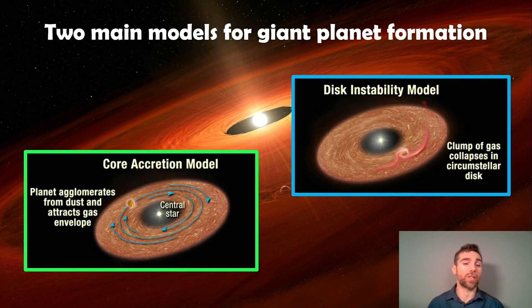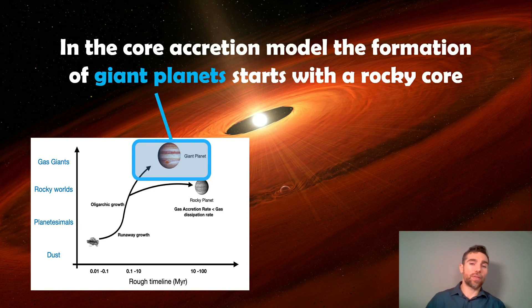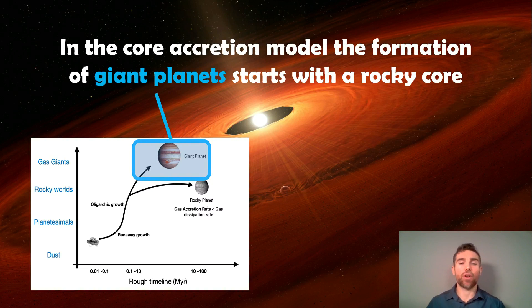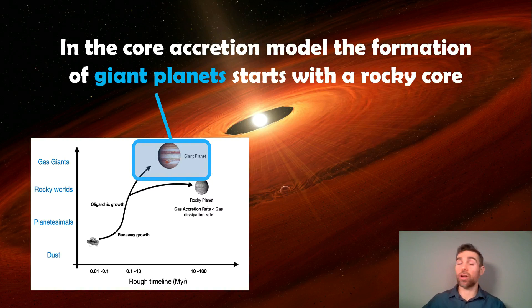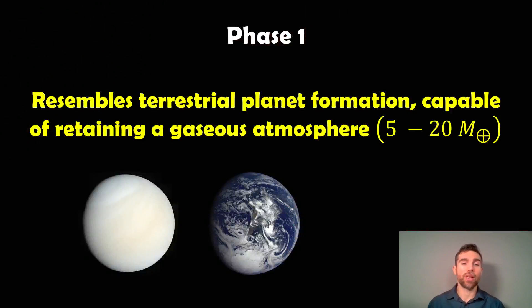Core accretion involves the slow accumulation and growth of a planet from dust and gas over time, ending with a gaseous envelope. Rocky planets and giant planets have a common route up to a certain point, because in the core accretion model giant planets have a rocky core and then continue to grow to giant planet size, whereas a rocky terrestrial planet tapers off. This is the route we're interested in here, and there are four phases.